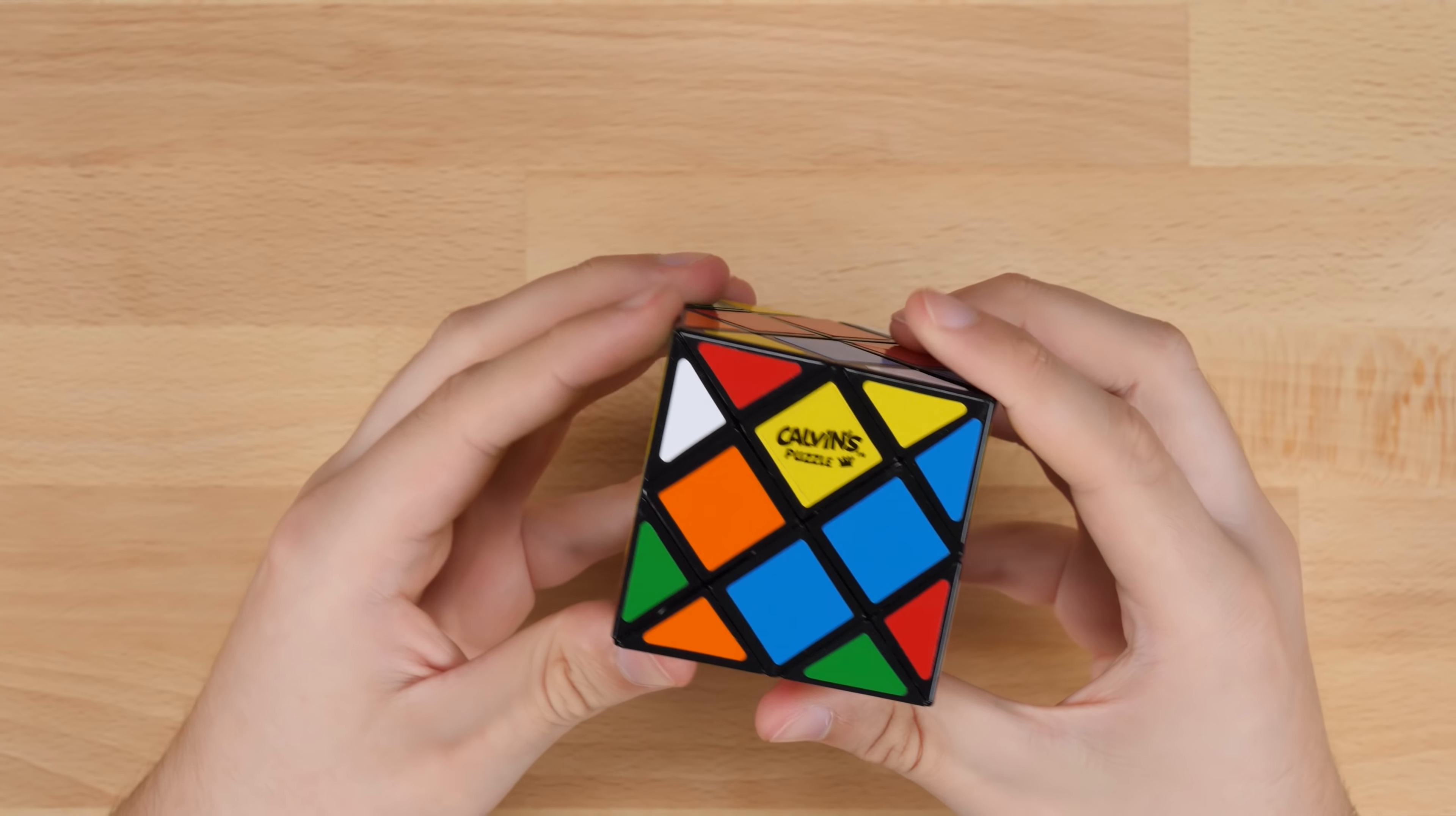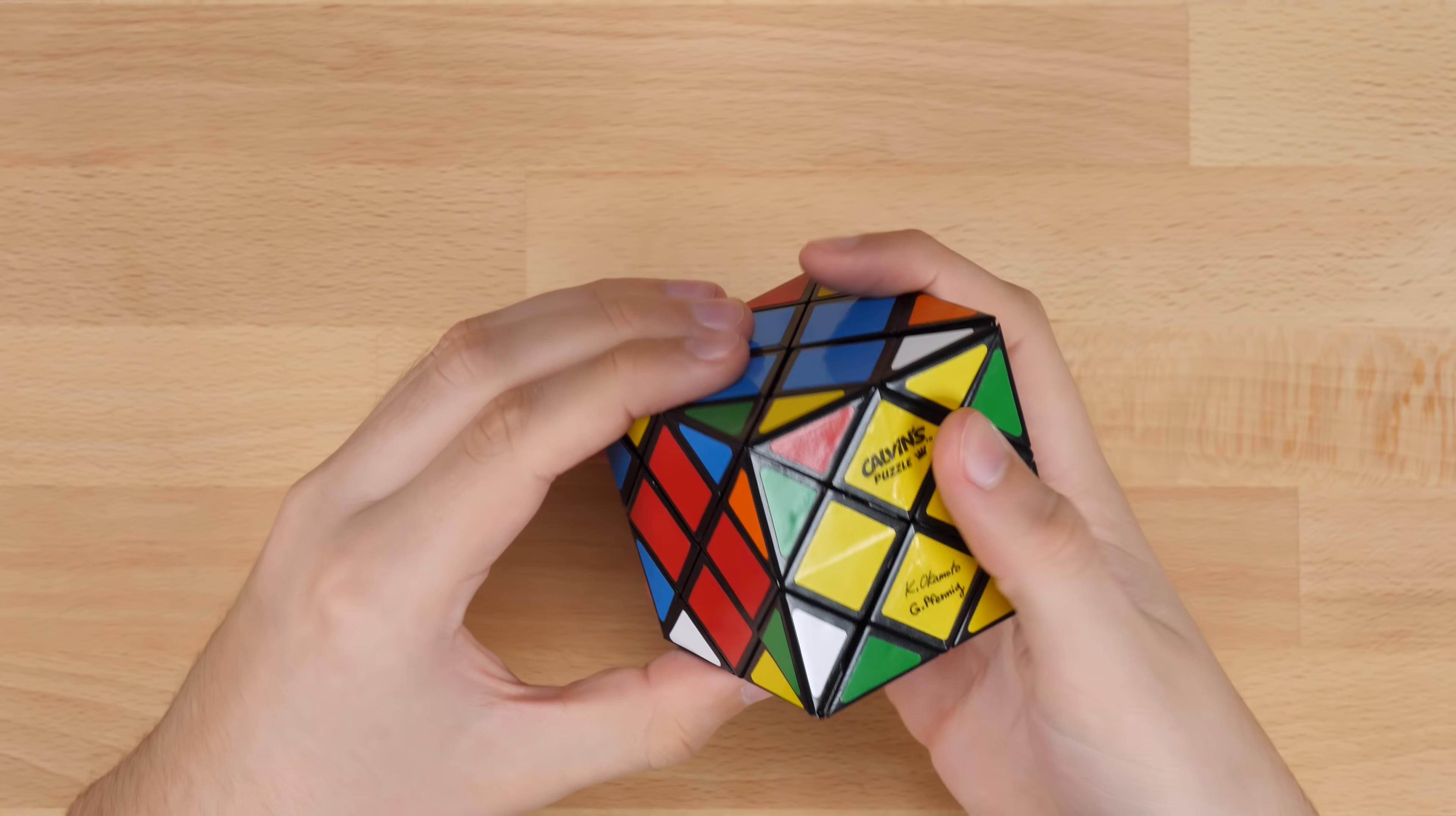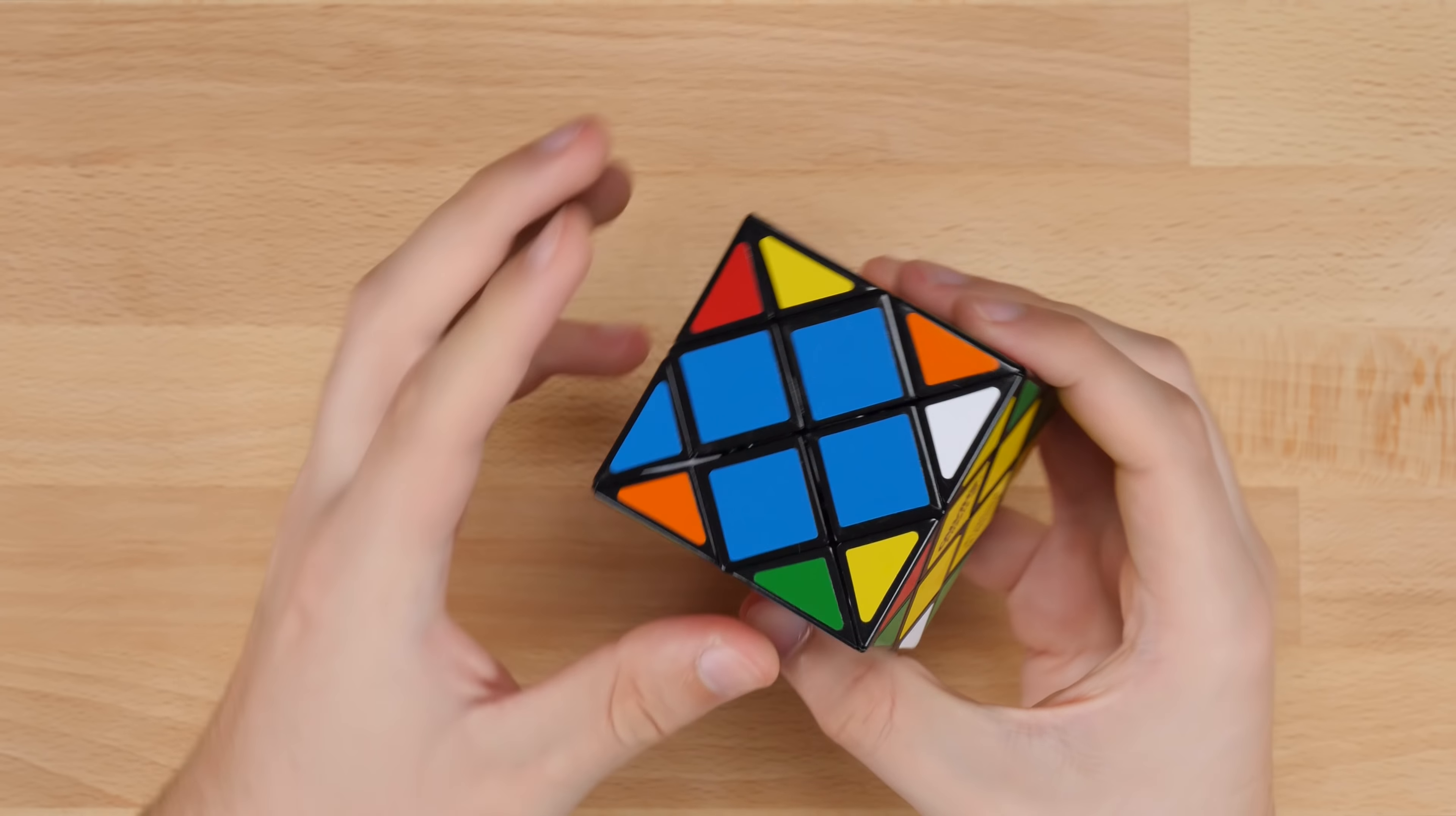Alright, and then for the top. This one is already solved. So that means we can cycle these 4 around it. Just like that. Okay, so now our dino cube portion is solved. So that's all these middle pieces here. So now just for these outer corners basically.